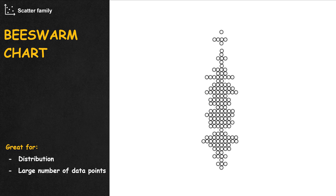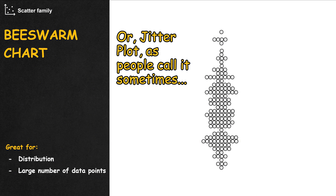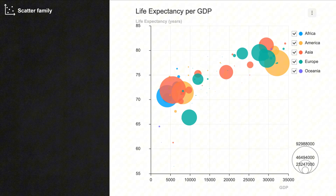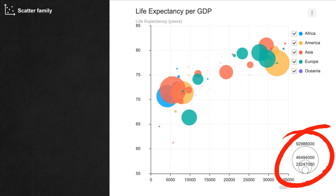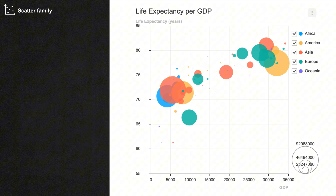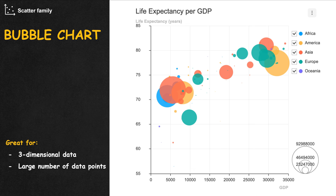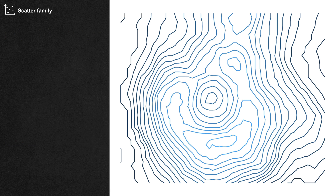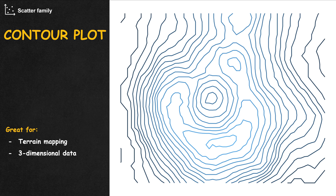Picking just one category group in the jitter plot gives us the beeswarm chart — it's like a one-dimensional scatter plot with dots closely packed together. Note that people sometimes use jitter and beeswarm interchangeably. What if we want to represent data with three numerical variables? We can use the size of each dot as the third-dimensional variable — this is called the bubble chart. Another way to visualize three-dimensional data in a two-dimensional plot is through the contour plot, where every dot on the same line has the same third variable value.